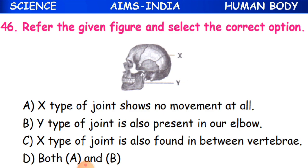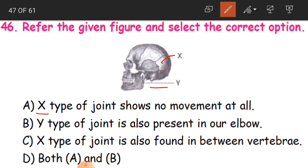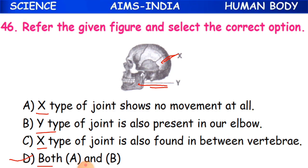Question 46: Refer to the given figure and select the correct option. There are X and Y joint types shown. X type of joint shows no movement at all, and Y type of joint is also present in our elbow (hinge joint). Both A and B are correct, so D is the correct answer.